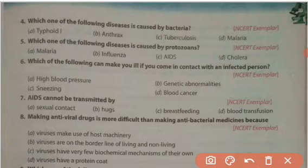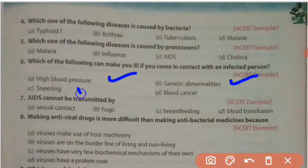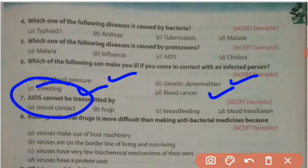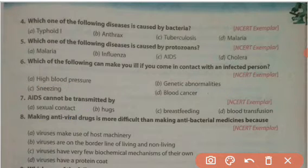Which of the following can make you ill if you come in contact with an infected person? Options are high blood pressure, genetic abnormalities, sneezing, and blood cancer. The answer is sneezing, because sneezing can infect a person.